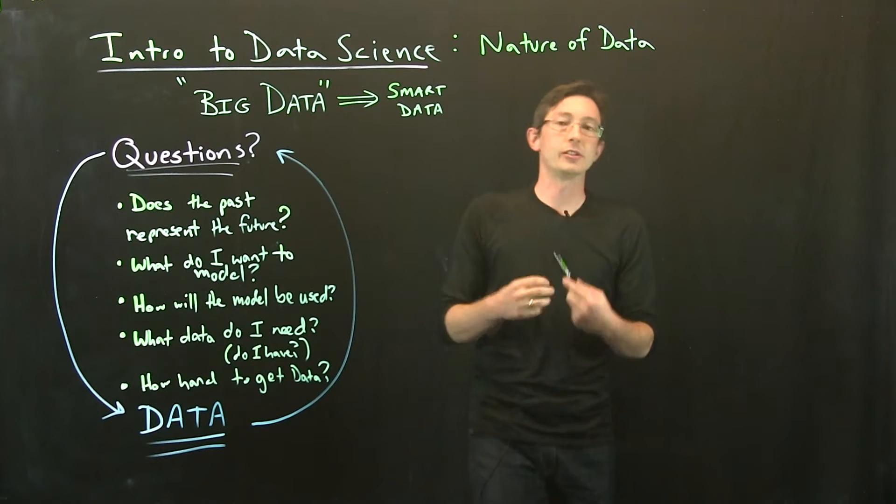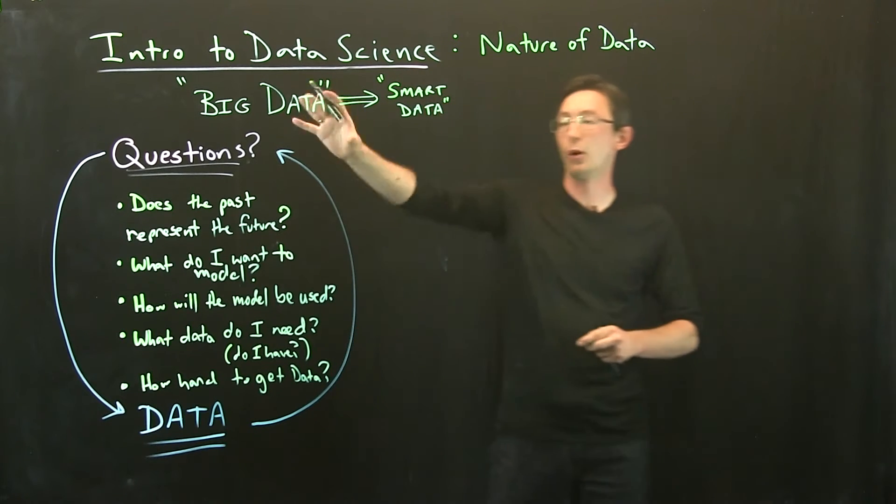I think it's not always important to stay in the big data regime, but sometimes we want to think about what I'm calling smart data. This is a bio-inspired principle. Animals and insects aren't collecting huge data about their environment, they have very targeted sensors collecting just the right information. Sometimes you want to learn to listen to a massive sub-sample of your data that's maximally informative.